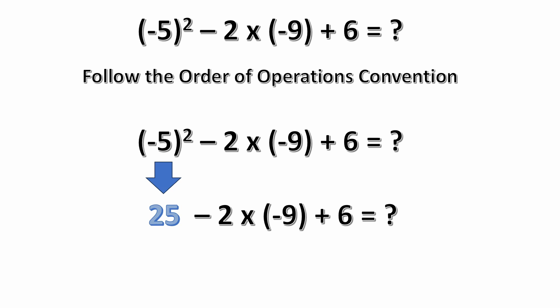We do have a minus 5 is squared, so you see here minus 5 squared is 25. We bring that down. Then we have 25 minus 2 times minus 9 plus 6.